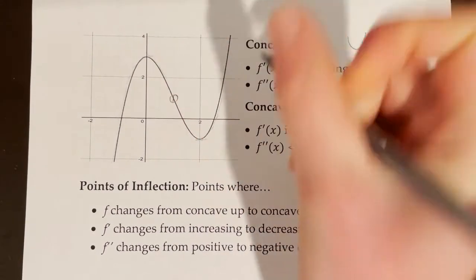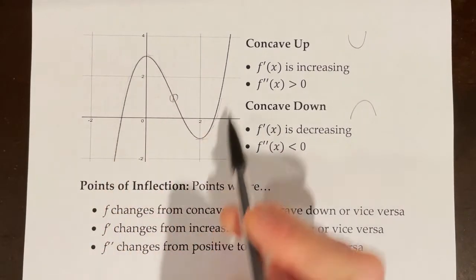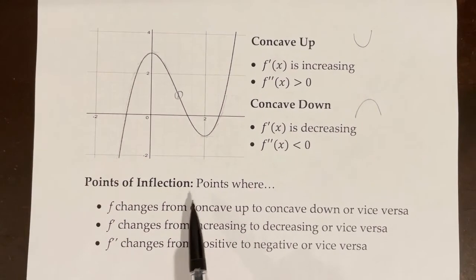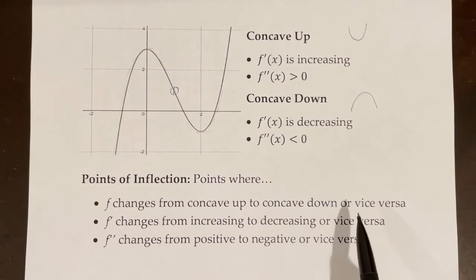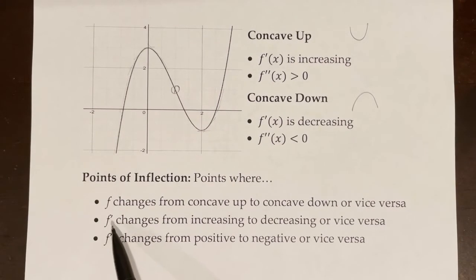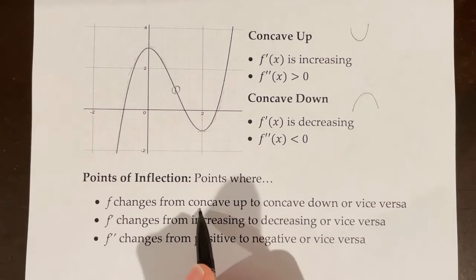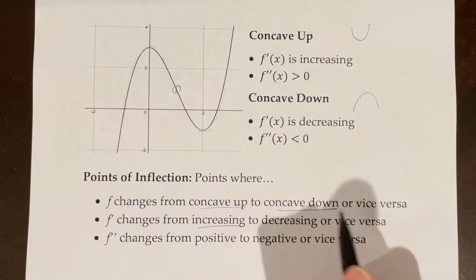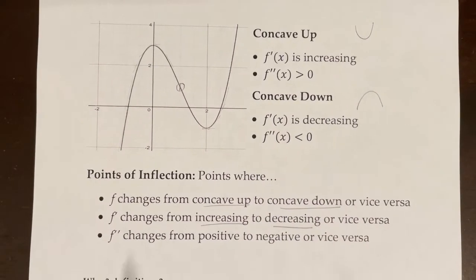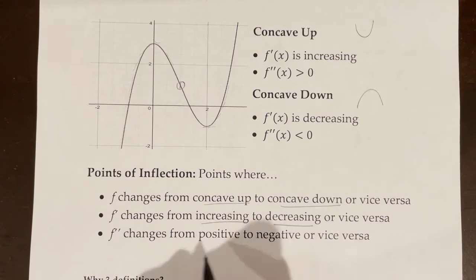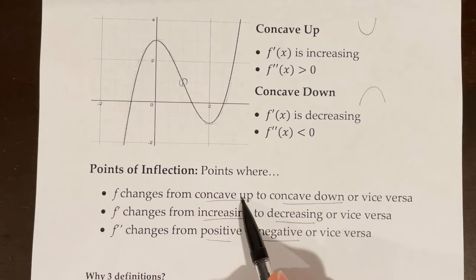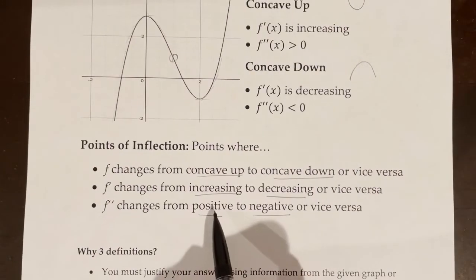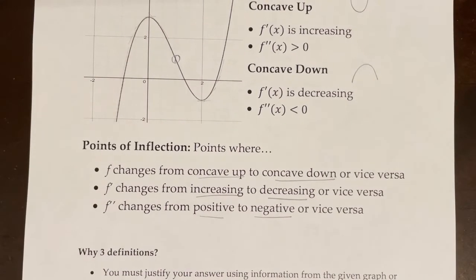So what is happening where the graph is changing from concave up to concave down, or concave down to concave up? That's called a point of inflection. Points of inflection are points where f changes from concave up to concave down, or vice versa. That means these are also points where f' — the first derivative — changes from increasing to decreasing, or vice versa. Additionally, f'' — the second derivative — changes from positive to negative, or vice versa.